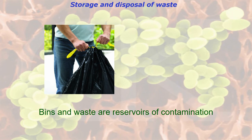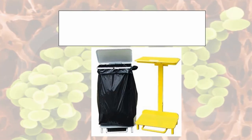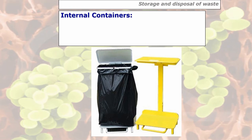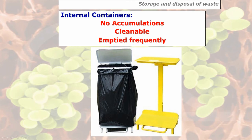Bins and waste are reservoirs of contamination. You've got two types of bins used in kitchens. The first is an internal bin — you can see the pedal underneath so it's foot operated, and the bin bag has been attached to the top. You shouldn't need to touch or open the bin with your hands, just open it with your feet. There shouldn't be any accumulations outside the main bin, so everything goes into the bin liner. It must be cleanable, preferably disinfectable, and emptied frequently throughout the day.